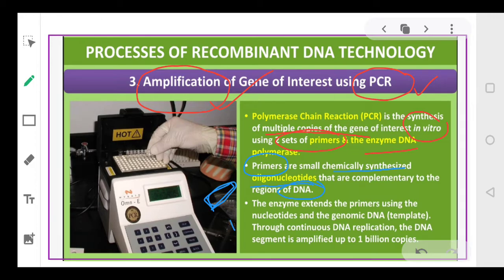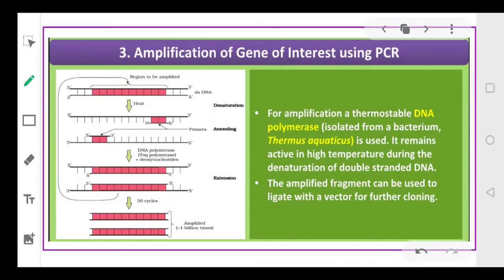After the primers attach to the DNA, DNA polymerase brings about the synthesis of new DNA. Through this process of DNA replication, that particular gene of interest can be amplified to produce one billion copies. We can produce one billion copies of that particular gene.